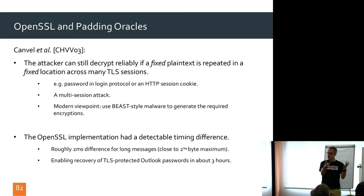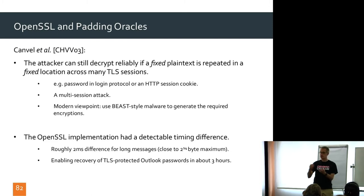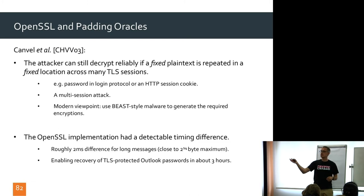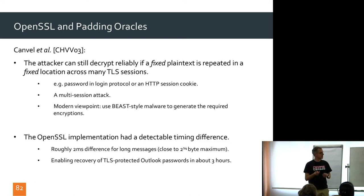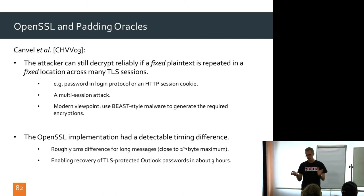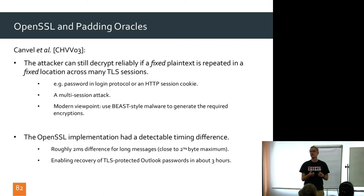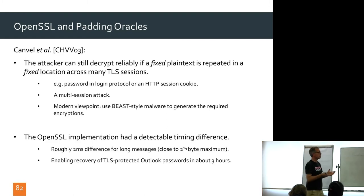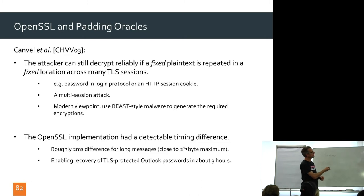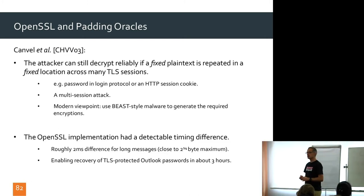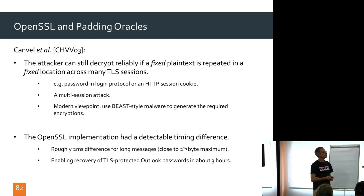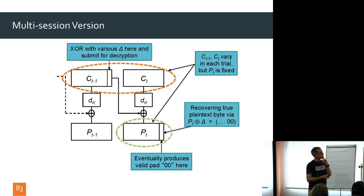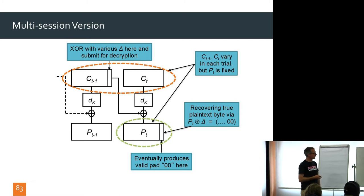So the attacker doesn't have to do anything with SSL — all the SSL negotiation is taken care of by the browser. The JavaScript provides the chosen-plaintext capability. That is Vaudenay's padding oracle attack. What are the countermeasures? The ideal thing would be to stop using MAC-then-encode-then-encrypt and switch to padding-then-MAC-then-encrypt, or better, encrypt-then-MAC, for which there are nice security proofs.